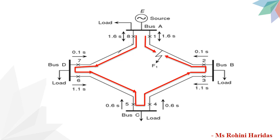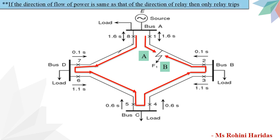Let us assume a short circuit occurs at point F1 as shown in the figure. In order to ensure selectivity, it is desired that only circuit breakers at relay 1 and relay 2 should open to clear the fault, while other sections of the ring remain intact to maintain continuity of supply. Power will be fed to the fault via two routes: route A — from E to A to F1, and route B — from E to D to C to B to F1. We have incorporated directional as well as non-directional relays along with the time grading principle.